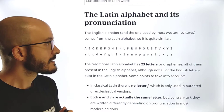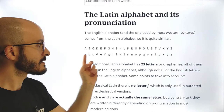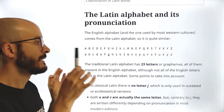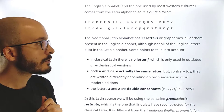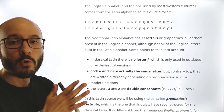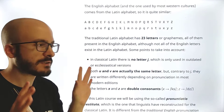Let's talk about the Latin alphabet and its pronunciation. The English alphabet and those used by most Western cultures come from the Latin alphabet, so they are quite similar. In Latin, we have 23 letters, and all 23 of these letters are present in the English alphabet, although not all English letters exist in Latin. So in English there are more than 23 letters, but the Latin ones are quite similar.